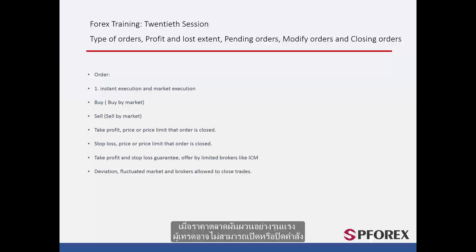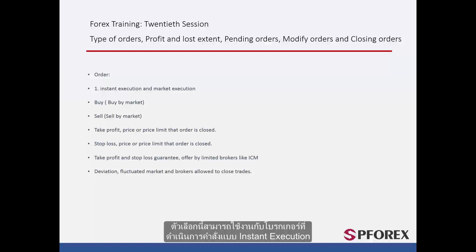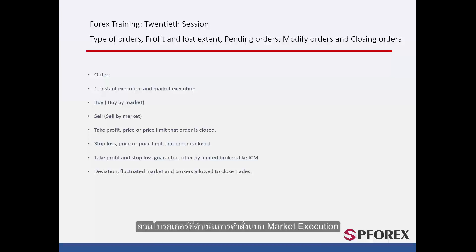When market price fluctuates extremely, a trader cannot open or close an order to the exact desired amount. Thus, price change or re-quote happens. To allow a broker to close or open an order at an approximate amount close to the desired price, traders should enable the quoted price in the order window. This option is available on brokers which provide instant execution orders. Brokers who represent market execution orders already have this option applied on all orders.